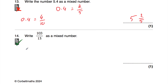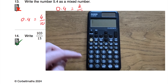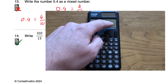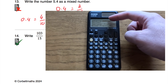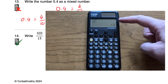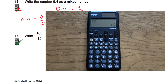Question number 14 is a calculator question: write 103 over 15 as a mixed number. It's very important to know how to convert between top-heavy fractions and mixed numbers on your calculator. Press the fraction button, type 103 on the numerator, press down, and type 15 on the denominator, then press EXE. To display as a mixed number, press the format button, go down to mixed fraction, and press EXE. The answer comes up as 6 and 13 fifteenths.